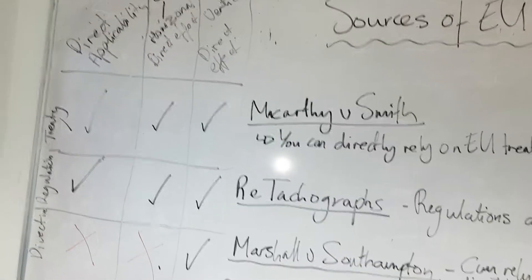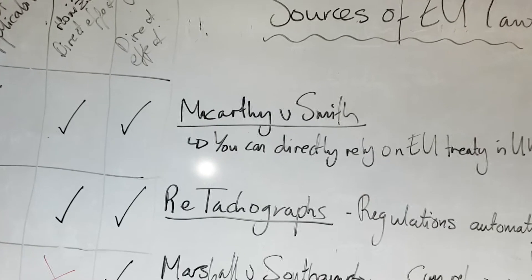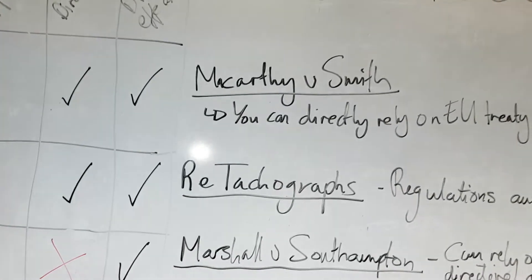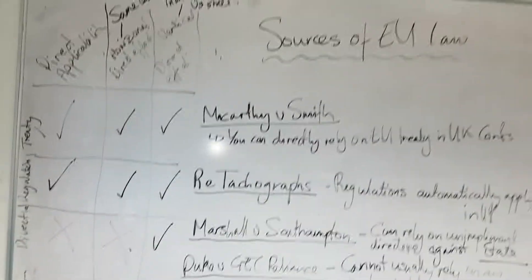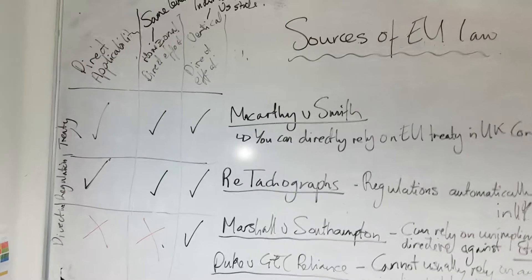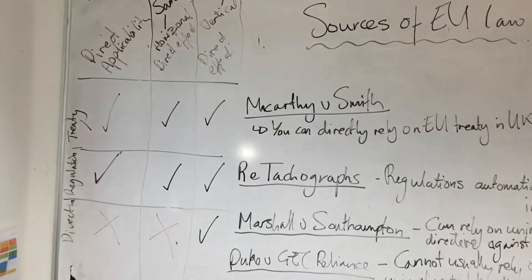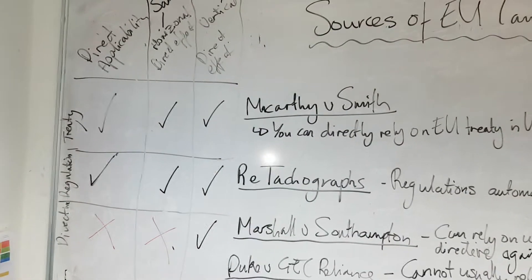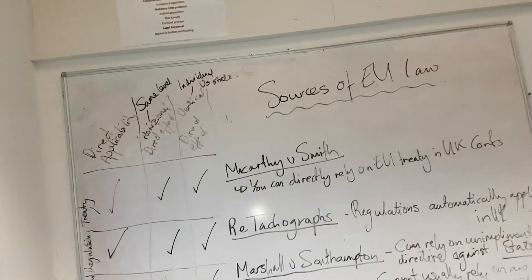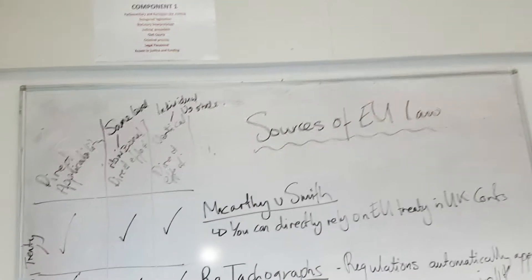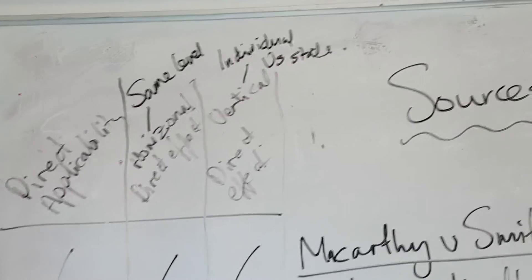The other thing we need to look at is direct effect. Direct effect is when an individual can rely on an EU law in their own member state's courts — so an individual in the UK can rely on EU law in the UK Supreme Court or the Court of Appeal. This is split into horizontal and vertical direct effect. Horizontal direct effect is when you as an individual are going up against somebody on the same level as you, such as another individual or another company.